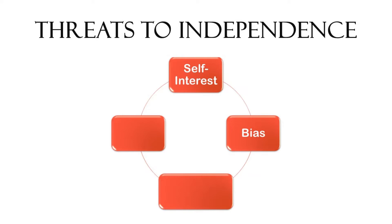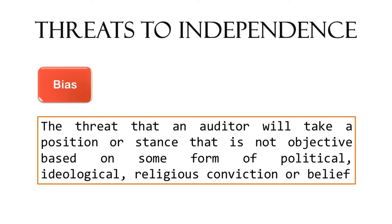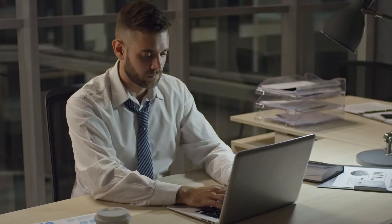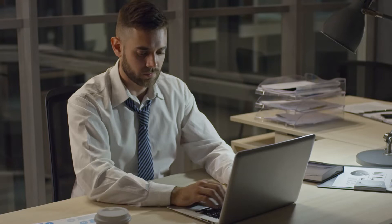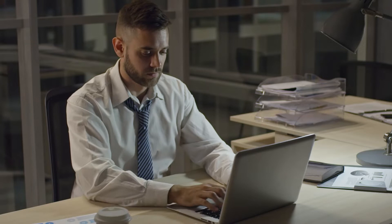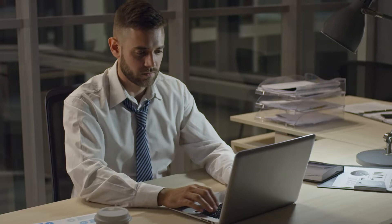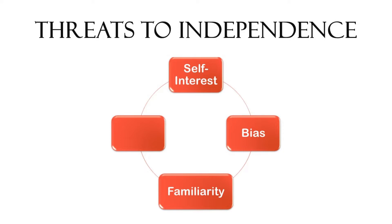The next type of threat is bias threat. This is the threat that an internal auditor will take a position or stance that is not objective based on some form of political, ideological, or religious conviction or belief. For example, an internal auditor who cares about the environment may make conclusions that dissuade management from pursuing a drilling or mining project based on personal conviction rather than objective evidence.